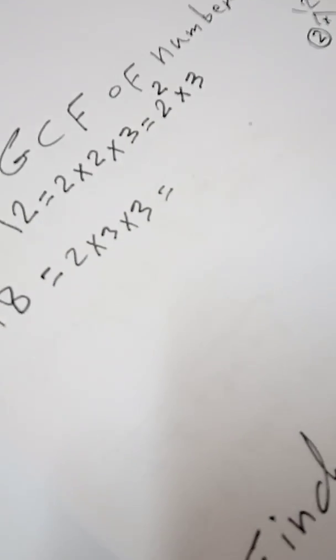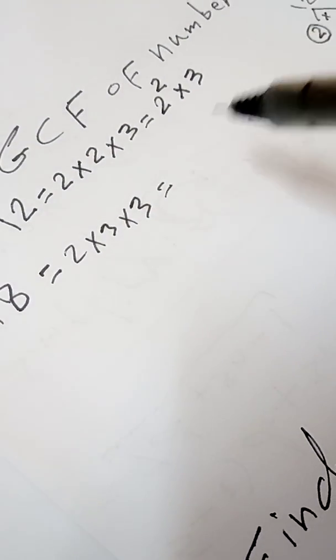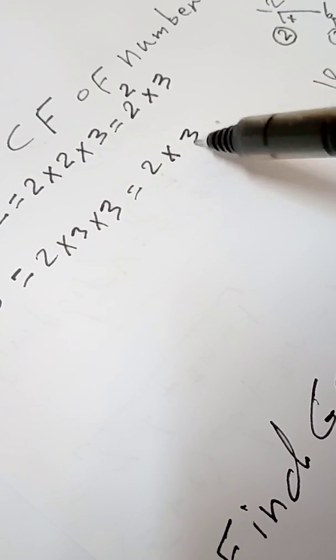Now take 18. Which two numbers have a product equal to 18? We can choose 3 times 6, or 2 times 9. Now 3 is prime, and 6 is composite — 6 equals 2 times 3. So the prime factors of 18 are 2 times 3 times 3. Writing it as an exponent: 2 times 3².